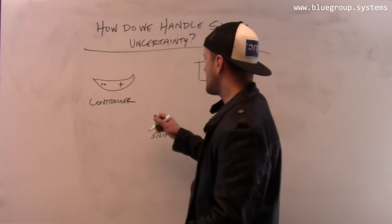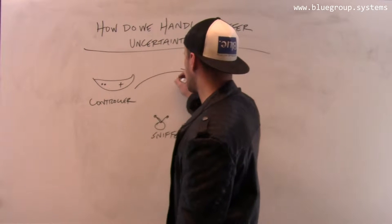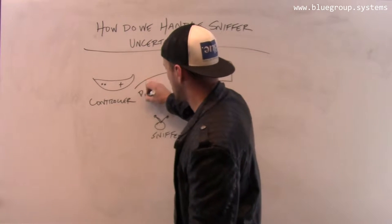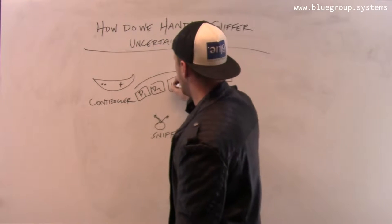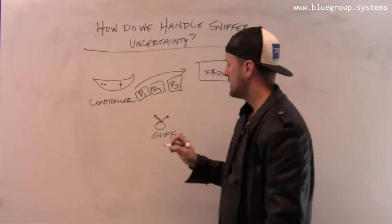Let's say that the controller sends three packets back to the Xbox base station, P1, P2, and P3.